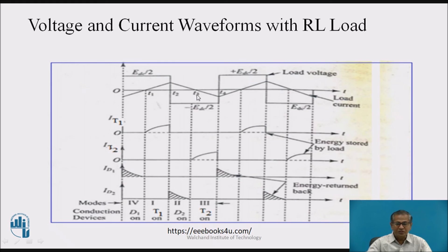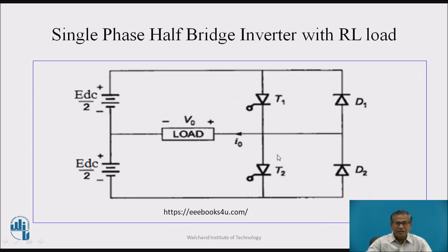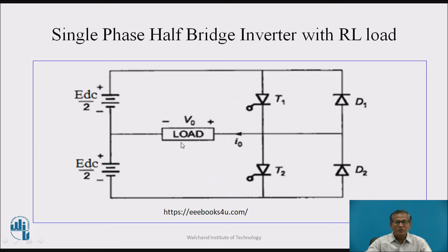At t = T3, the gate pulse is available for T2. T2 conducts and acts as short. The direction of current is: source → load → T2. The current flows through the lower half. Assume this direction of current is negative and the load voltage is negative — the negative half cycle appears across the load. At t = T4, T2 turns off, but the highly inductive load tries to maintain the current in the same direction. Therefore this inductive load forces the current through D1 → Edc/2 → load. The direction of current remains the same, but the direction of load voltage is exactly opposite.